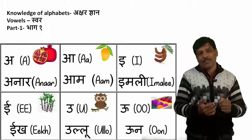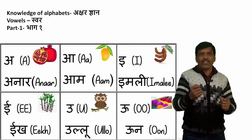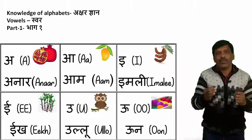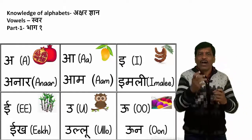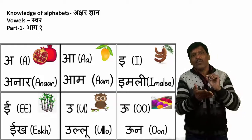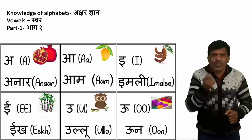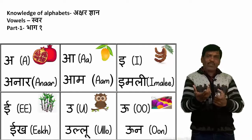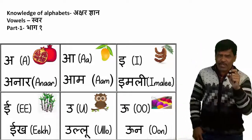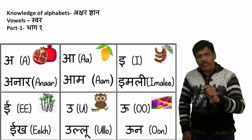Then comes U. See my expression — U. U for ullu ka ullu — owl! What we say — owl. In Hindi we say ullu. U for ullu. For U, what we use is the English alphabet U. U for ullu — owl.